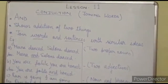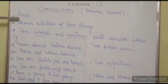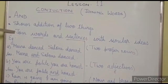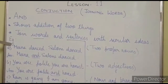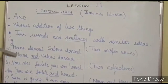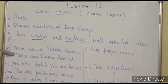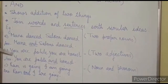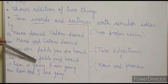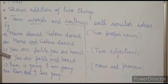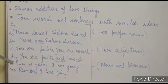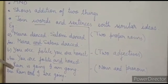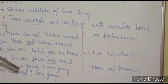Have a look at the board very closely. The first conjunction is 'and.' It shows addition — joining of two things. It joins words and sentences with similar ideas. Example 1: 'Mina and Saloni danced' — two proper nouns joined. Example 2: 'You are polite and honest' — two adjectives joined. Example 3: 'Ram and I are going' — a noun and a pronoun joined.